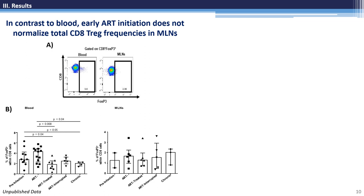Regulatory T cells are immunosuppressive cells that play an important role during both SIV and HIV infections via the inhibition of antiviral-specific responses. CD8 T-regs are understudied in the context of SIV and HIV infections compared to CD4 T-regs. One study reported an expansion of CD8 T-regs with suppressive capacity over effector T cells in the colorectal mucosal tissue of SIV-infected monkeys. Here, we observed a decrease in the frequency of these cells after early ART initiation only in the blood of infected monkeys, while we observed no differences in their frequency within the mesenteric lymph nodes, indicating an accumulation of these immunosuppressive cells in this compartment despite ART.